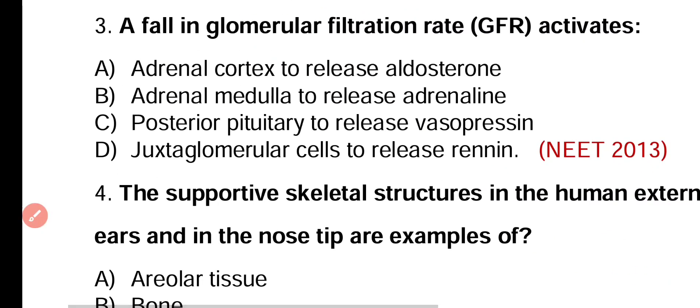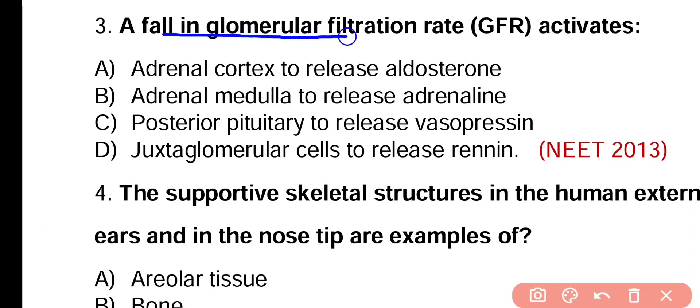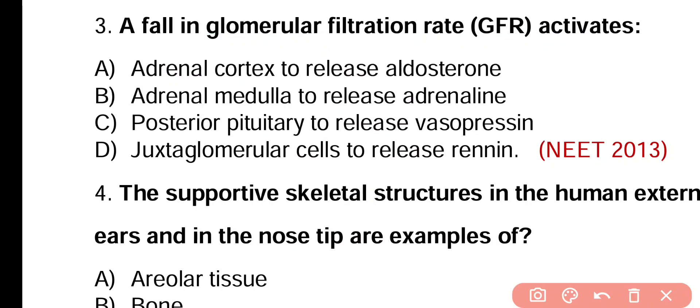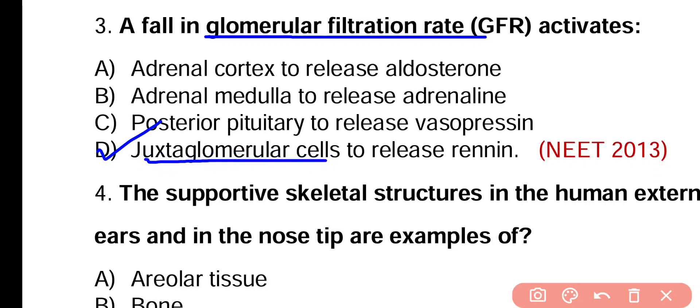Question number 3. A fall in glomerular filtration rate (GFR) activates: adrenal cortex to release aldosterone, adrenal medulla to release adrenaline, posterior pituitary to release vasopressin, or juxtaglomerular cells to release renin? Correct answer is option D. A decrease in glomerular filtration rate activates juxtaglomerular cells of kidney to release a protein known as renin.